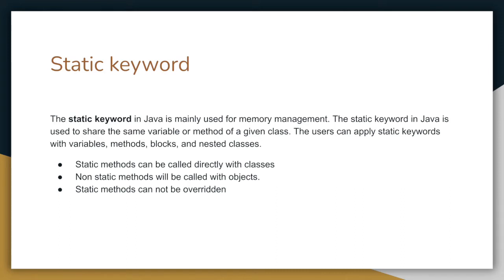We can declare the school name as static, so once we initialize it, that value is shared across all objects. The static keyword can be applied to variables, methods, and static blocks. Static methods can be called directly with the class name — there is no need to create an object. Non-static methods must be called with an object. Static methods cannot be overridden once declared.